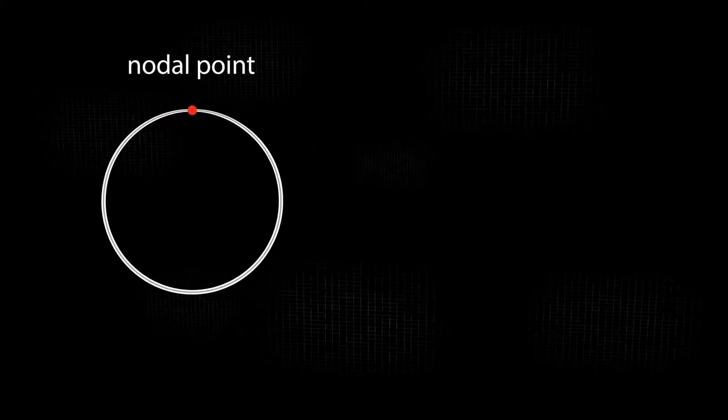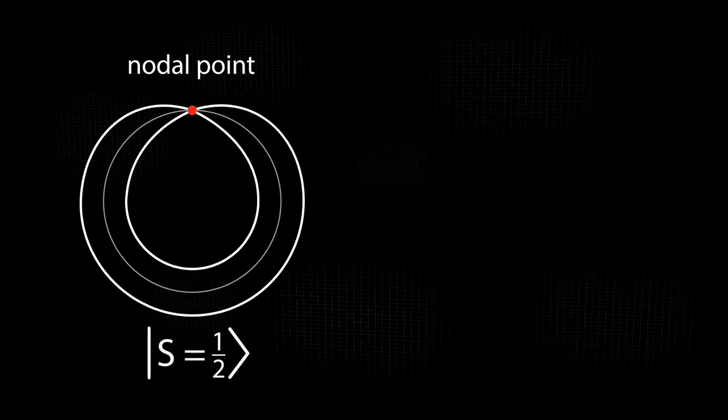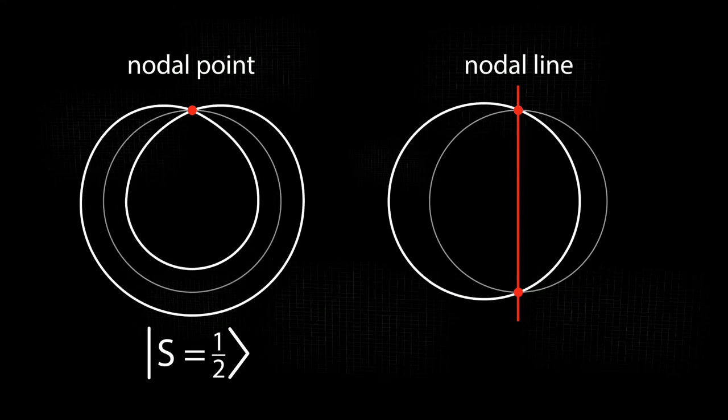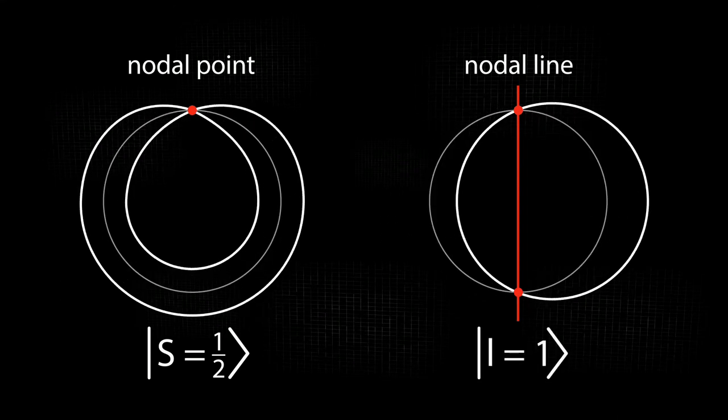The double wound fundamental mode has one node. It represents the spin state. The first overtone has one nodal line as usual and represents the state L equals 1.